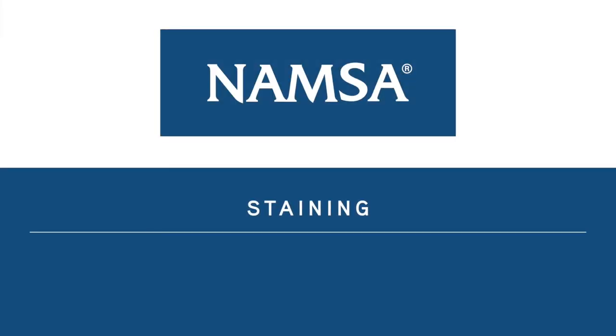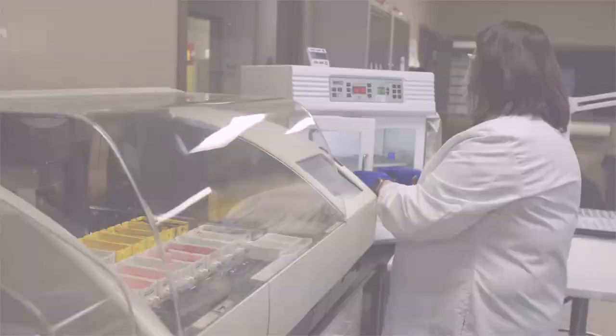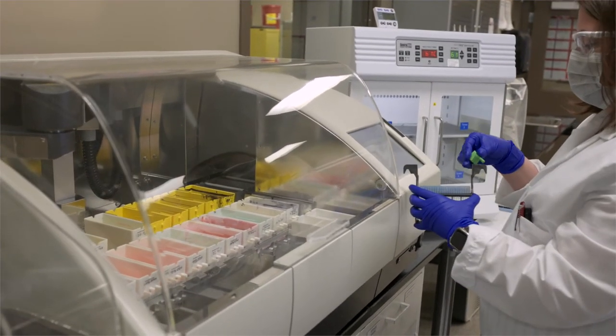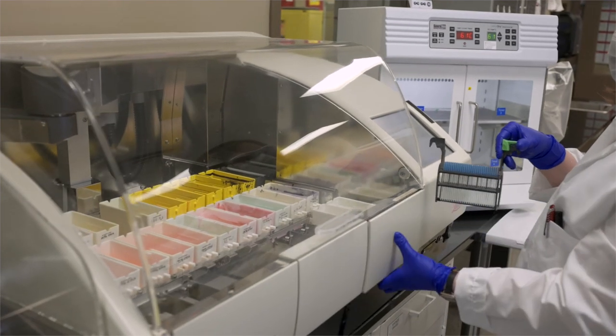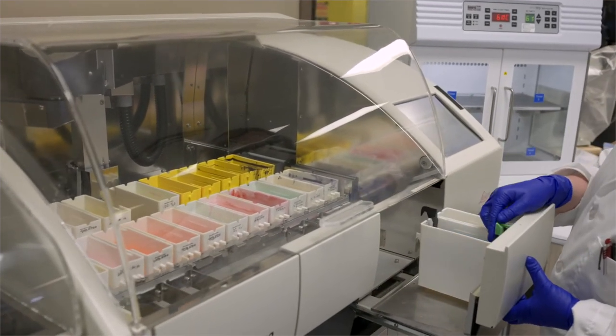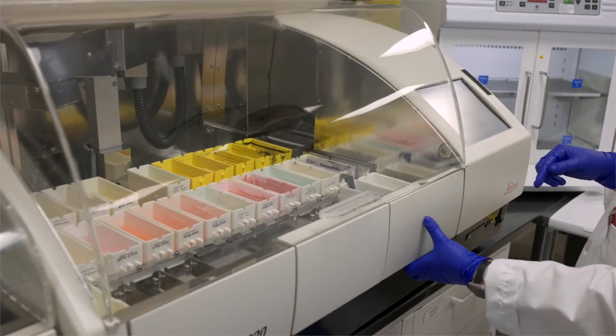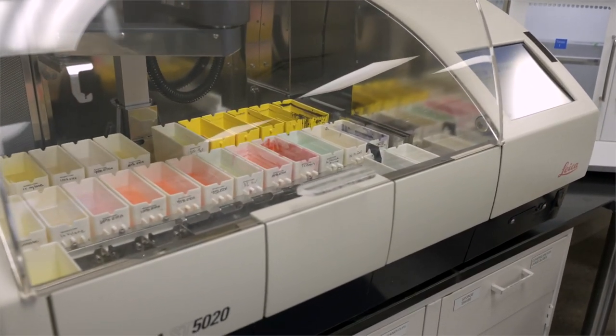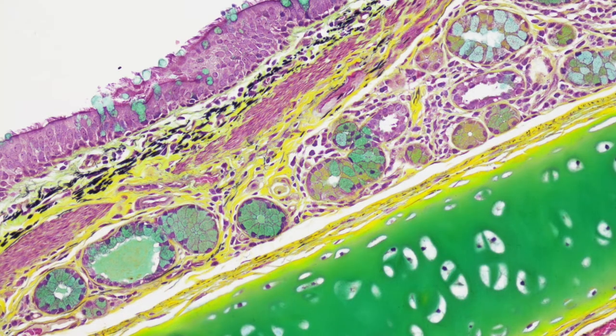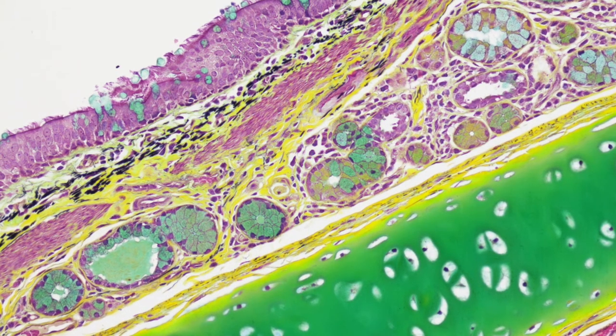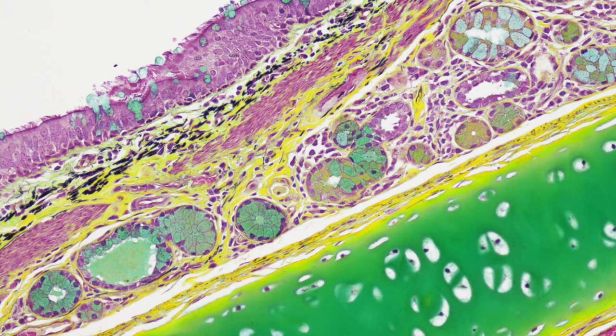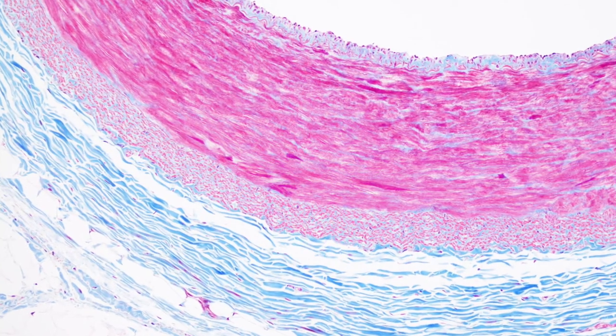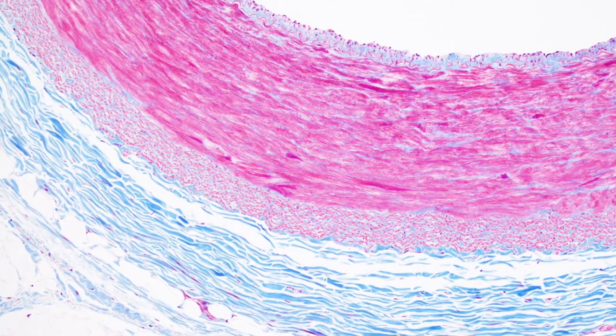Staining. An automated hematoxylin and eosin, H&E stain, is performed on both paraffin and plastic slides on the majority of study samples. We offer 22 different chemical stains for paraffin and thin section plastic. Most commonly used are pentachrome to demonstrate mucin, fibrin, elastic fibers, muscle, and collagen. Bissons trichrome to differentiate between collagen and smooth muscle.